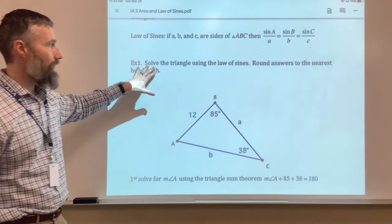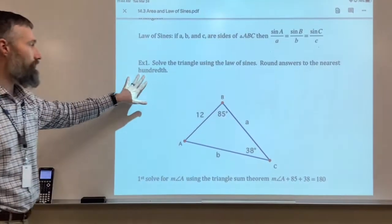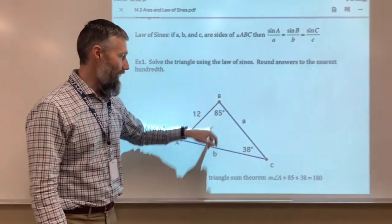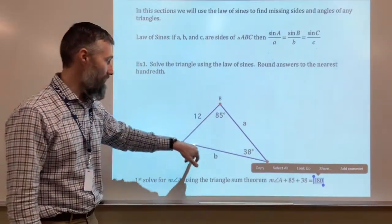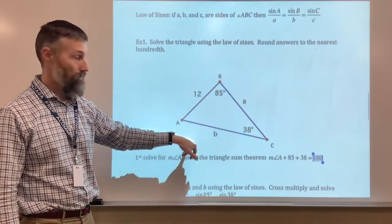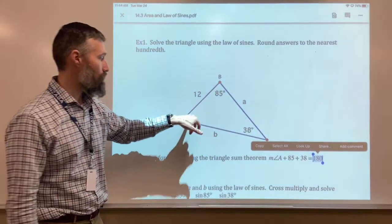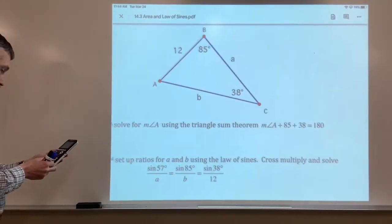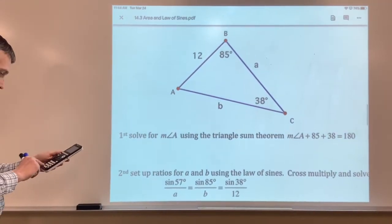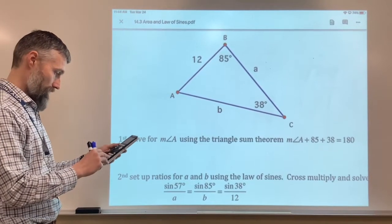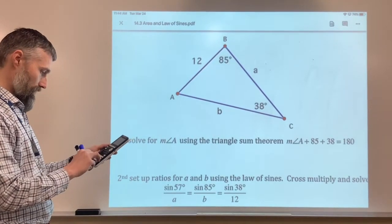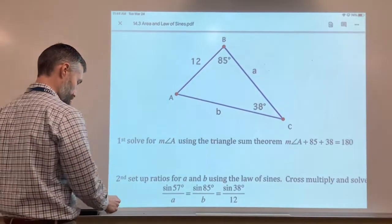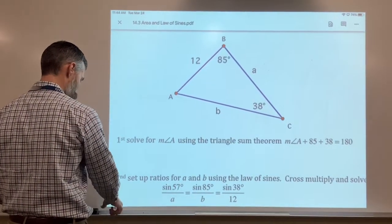So we're going to solve the triangle using the law of sines. We're going to round our answers to the nearest hundredth of two decimal spots. First thing I see here is that I have two angles, and I'm going to get my third angle. Because the interior angles of a triangle always add to 180. So I'm just going to get in my calculator. I'm going to go 180 minus the 85, and minus 38, and I get my remaining angle, which is 57.